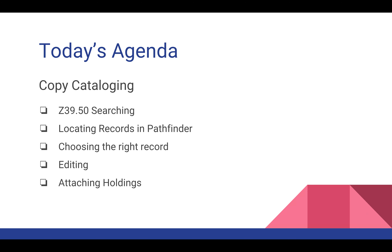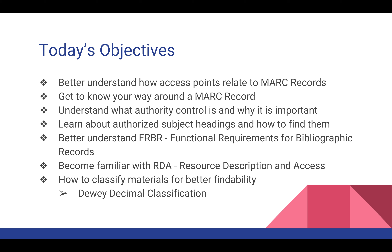We're going to take a look at MARC records and go over the fields that make up a record, plus how subject headings and authority control make records better and why they matter. And no discussion on cataloging would be complete without discussing RDA and FRBR and how these two acronyms have changed the way we catalog today. We will also talk on classification and how you classify makes things easier to find in your library and catalog.